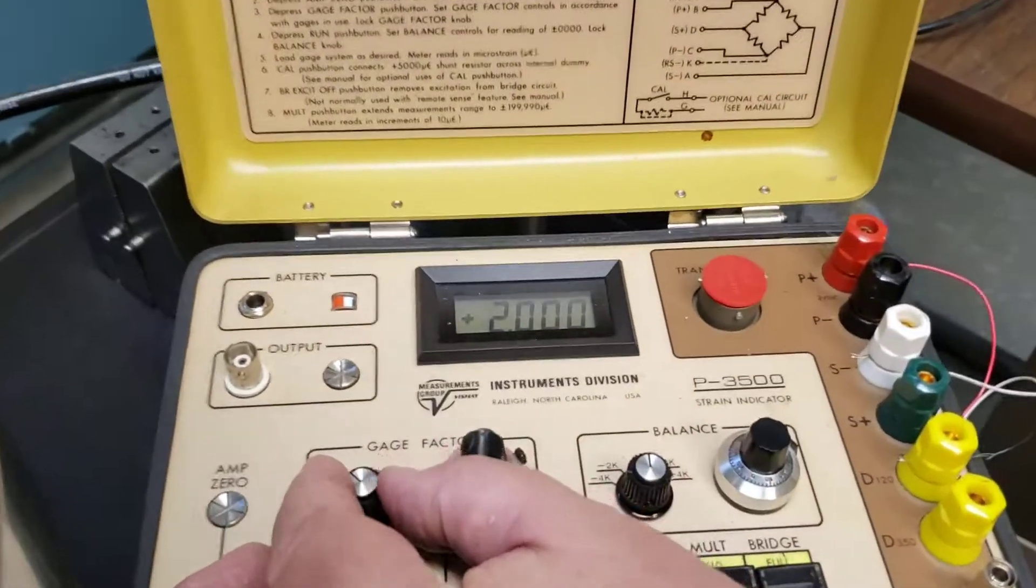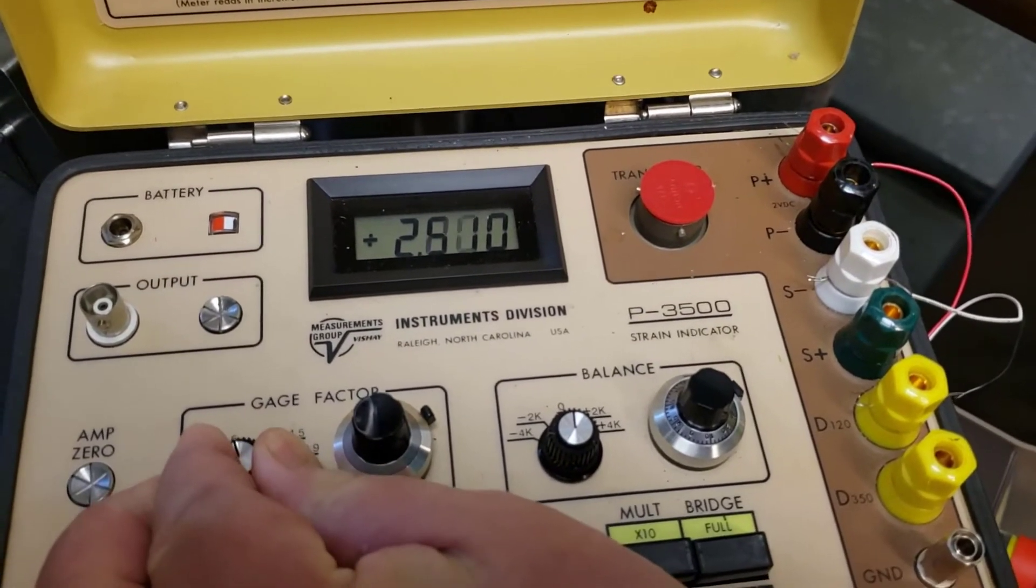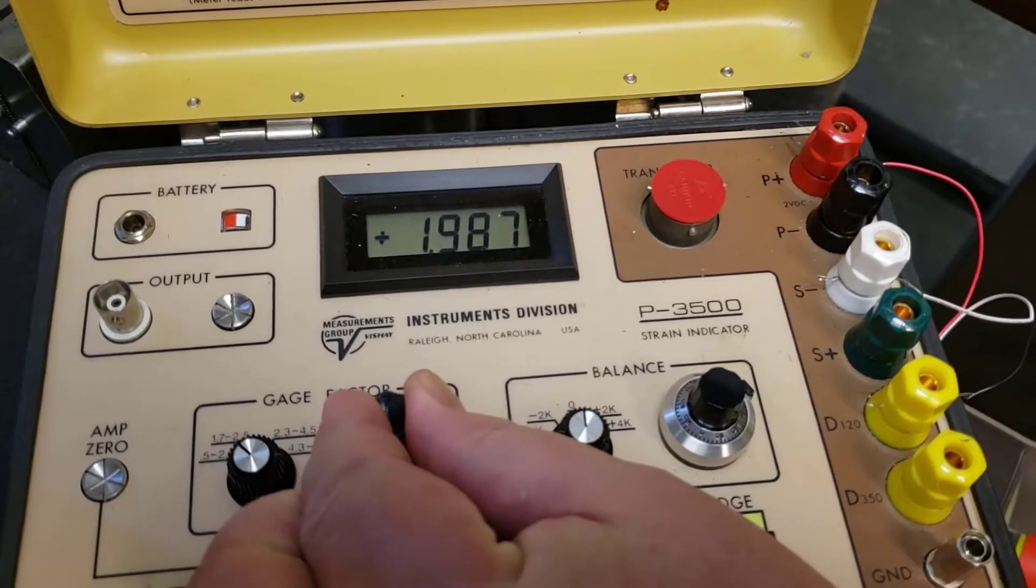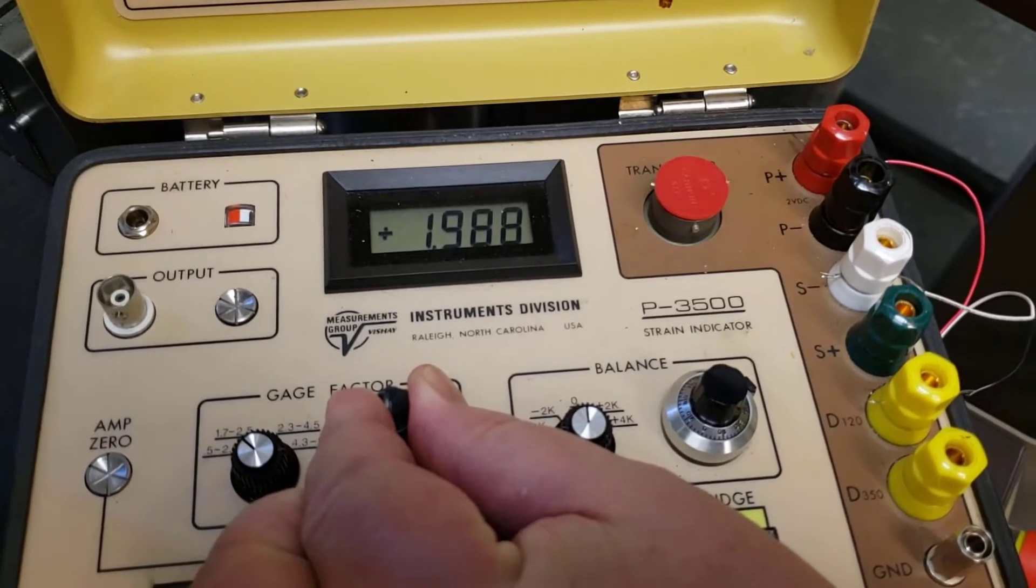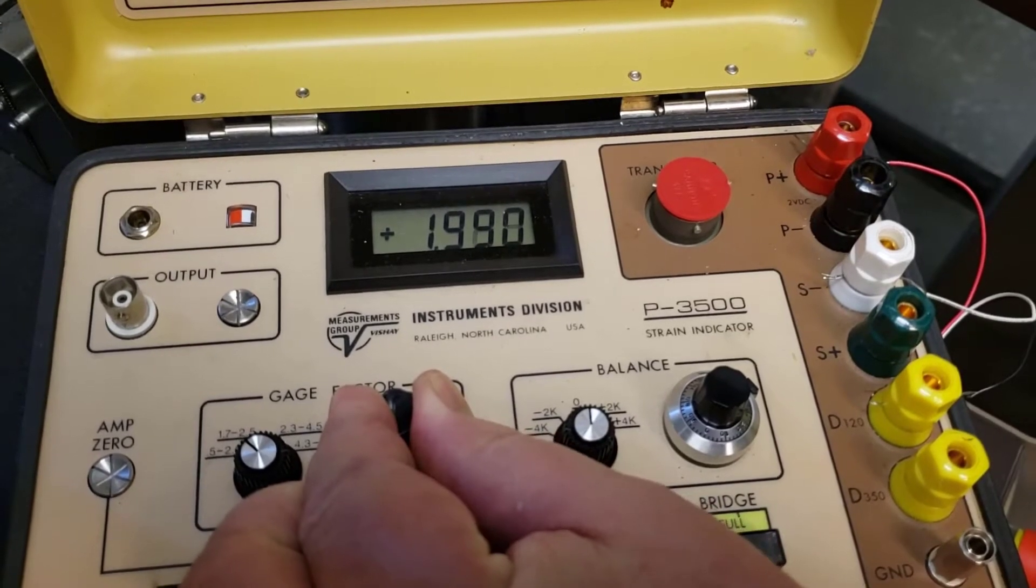This can be adjusted with the gauge factor here. Let me get my other hand to show you, and we can turn that up and down a little bit. You can see, and then some fine-tuning here. Normally these are 1.99, this particular batch.